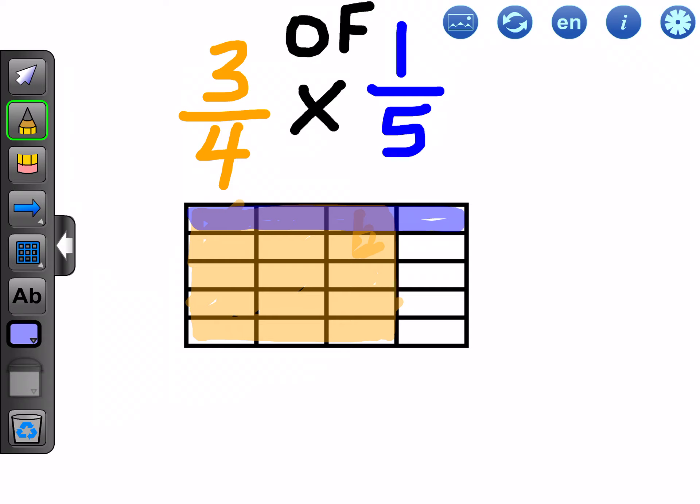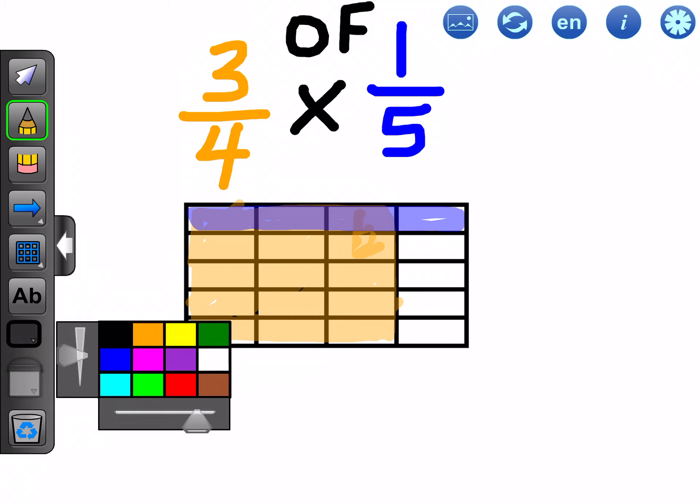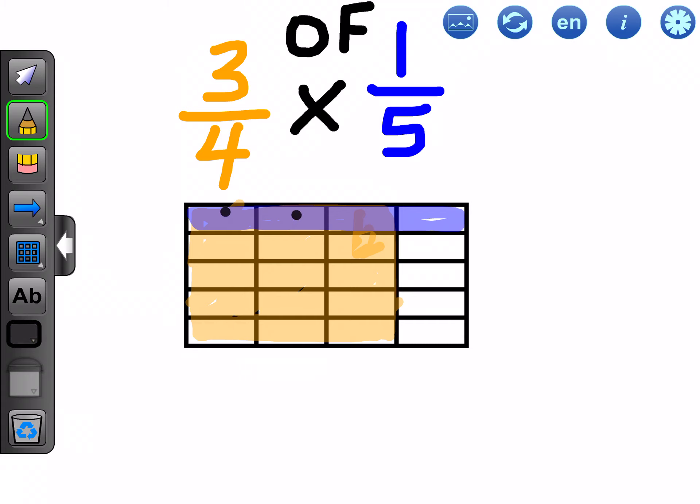Now, let's take a look. So we're looking for three quarters of one fifth. That's going to be anything that is colored in both orange and blue. And if we take a look at our representation here, it looks to me like there are one, two, three. There are three pieces that are colored in both orange and blue.